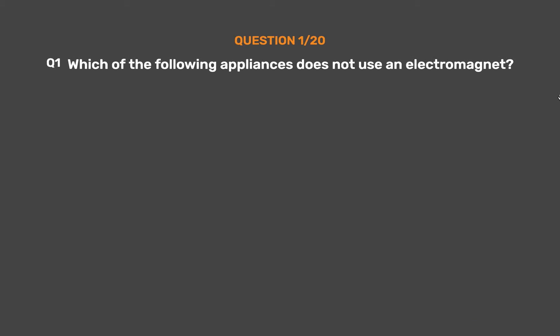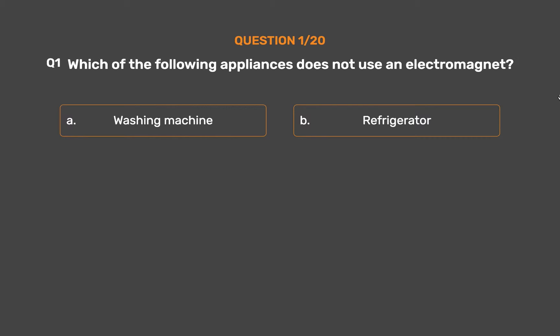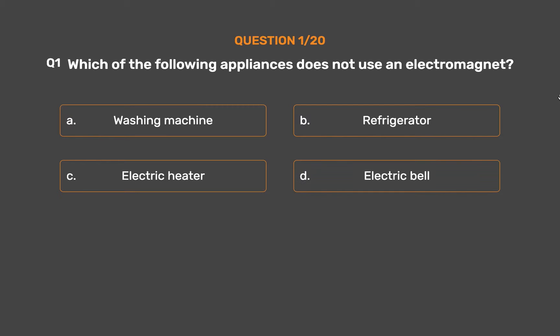Question number 1. Which of the following appliances does not use an electromagnet? Option A: Washing machine. Option B: Refrigerator. Option C: Electric heater. Option D: Electric bell.